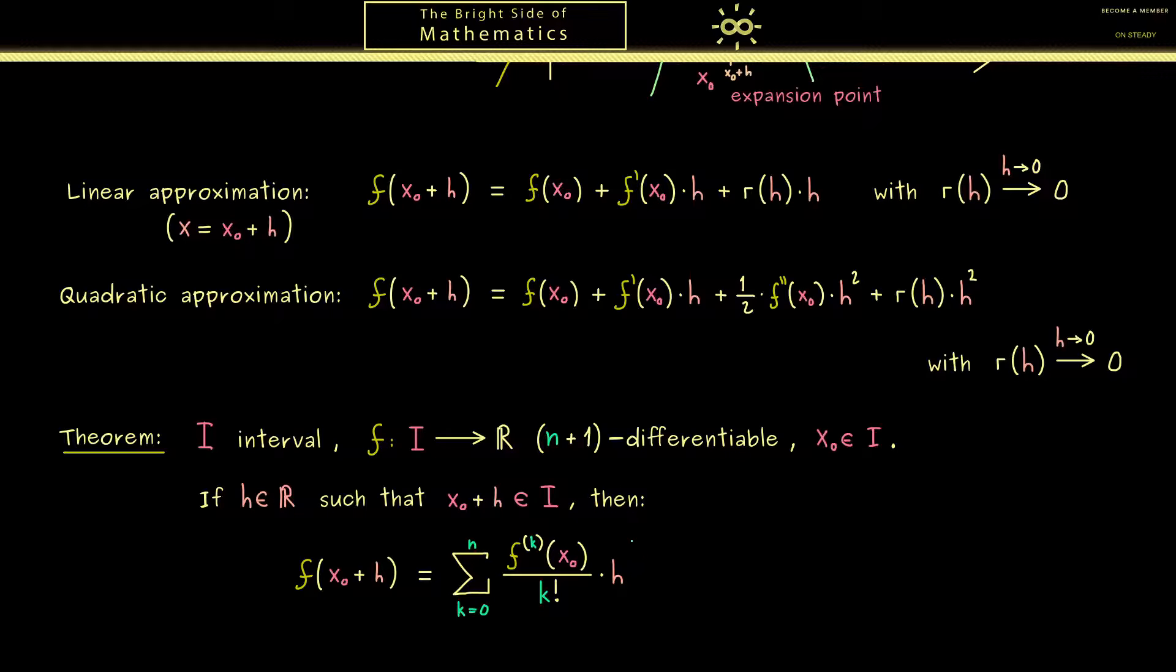However more importantly here I should tell you that we also have our variable h in. Namely with h to the power k. Hence what we get here is indeed a polynomial with degree at most n. And as we have seen before we also have a remainder term at the end.